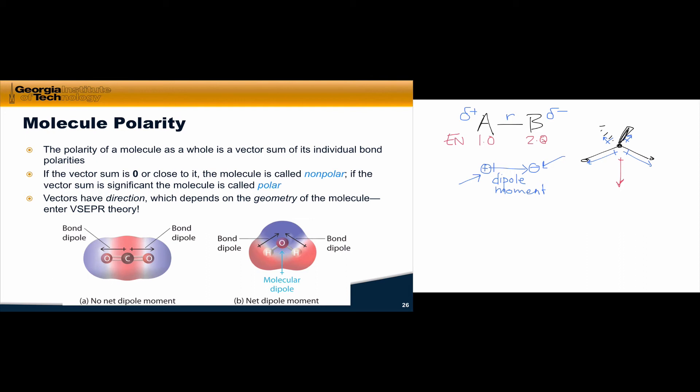So CO2 does have non-zero bond dipoles within it, and overall, a somewhat asymmetric distribution of charge within it. However, the overall molecular polarity here is zero, because the two bond dipoles directly cancel one another out. Notice that the linear geometry of the molecule is essential to that. If CO2 had a bent structure, like water, then it would have an overall dipole moment.